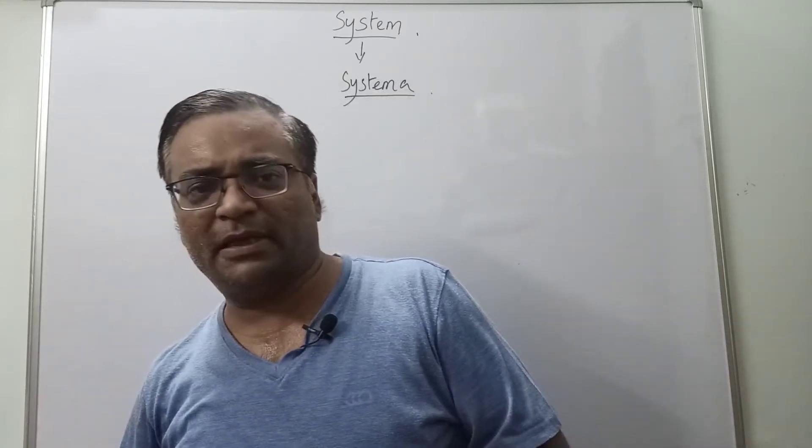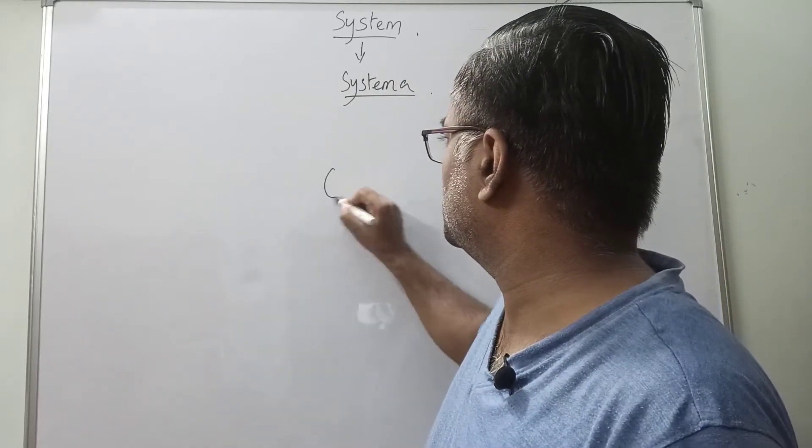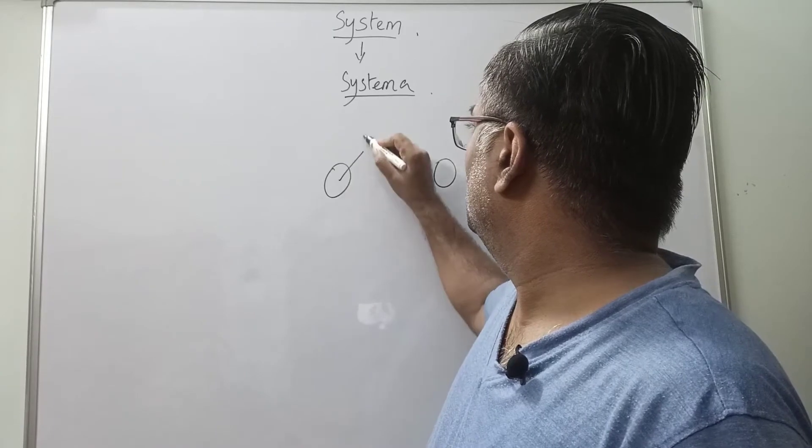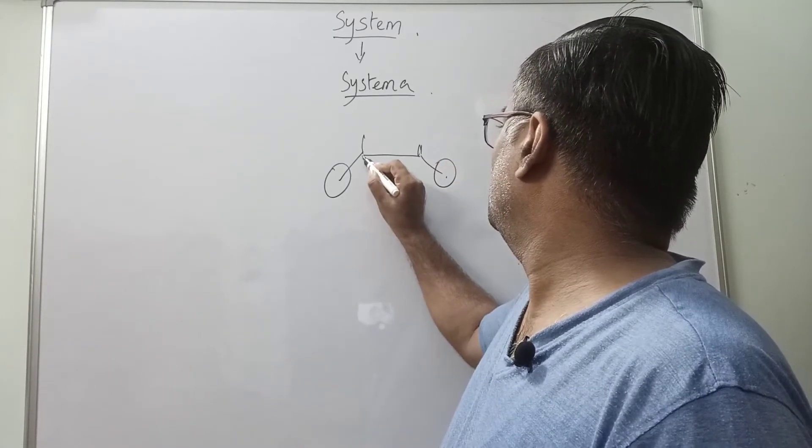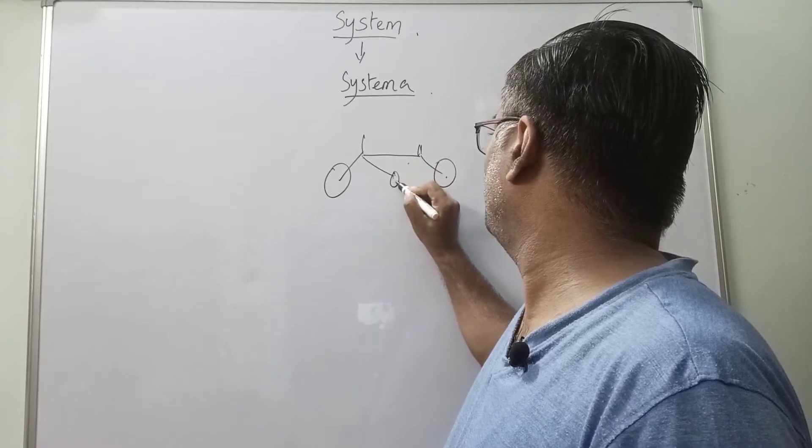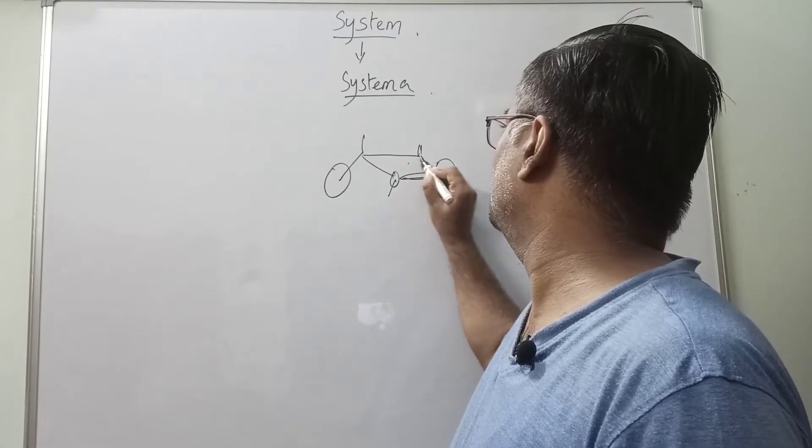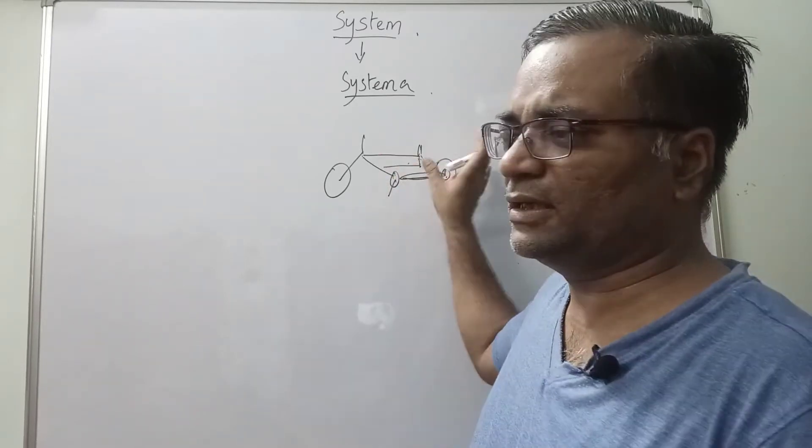Suppose you all have a cycle with components such as two tires, one handle, one seat, and there are some connectivity here - one pedal and there is a chain. There is some orderly connection to this cycle.